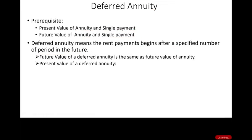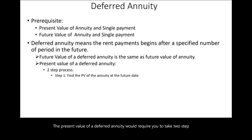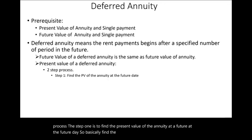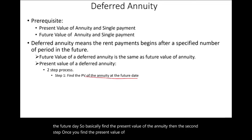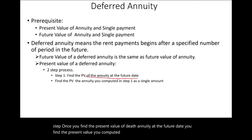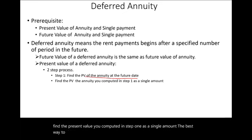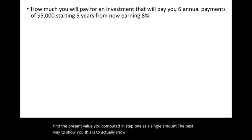The present value of a deferred annuity requires a two-step process. Step one is to find the present value of the annuity at the future date — simply find the present value of the annuity. Then in step two, once you find the present value of that annuity at the future date, you treat that value as a single amount and find its present value today. The best way to show this is with an example.